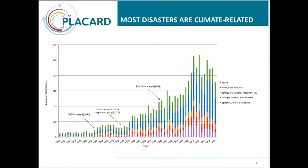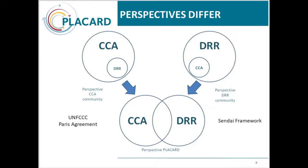Many of you may be familiar with this graph showing the number of disasters. With the exception of earthquakes and diseases, all of these disasters are weather or climate related and they're increasing. So there is really a rationale to look for connections between the two areas. But in practice, the two fields are actually separated to a large extent, both in science and also in policy and practice.